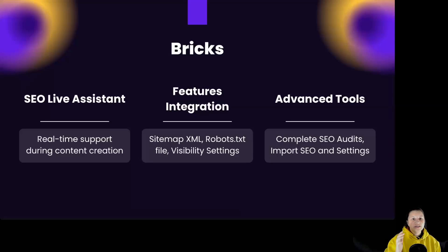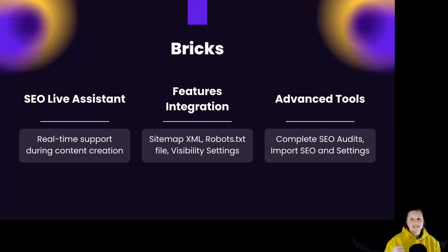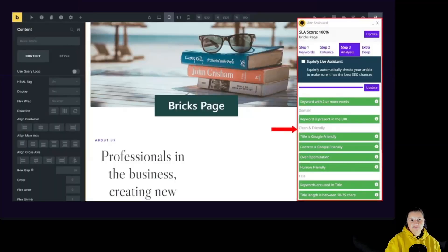For Bricks, you get real-time support during content creation with the SEO live assistant. Features include sitemap, robots, and visibility settings, as well as advanced tools like complete SEO audits and import of SEO settings. Bricks users can access real-time SEO assistance from Squarly's live assistant, and the integration supports comprehensive tools for SEO management and optimization.